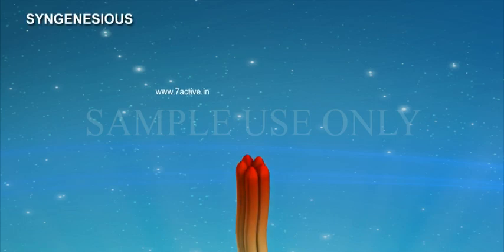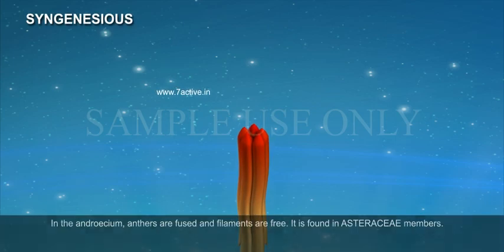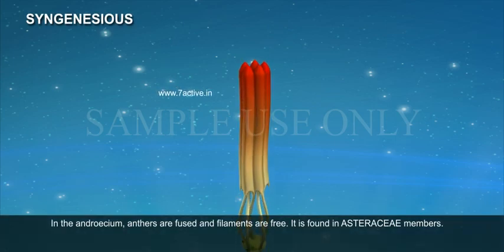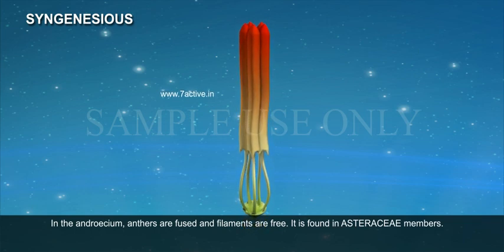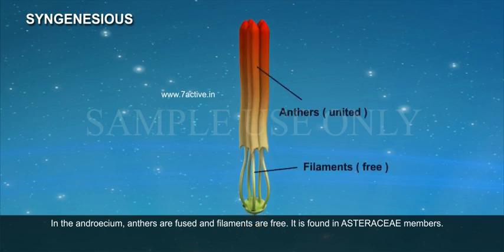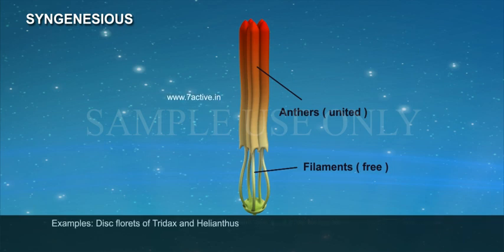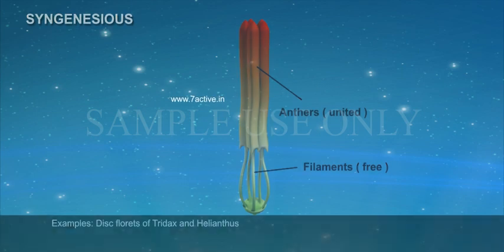Syngenesious. In the androecium, anthers are fused and filaments are free. It is found in Asteraceae members. Example: disc florets of Tridax and Helianthus.